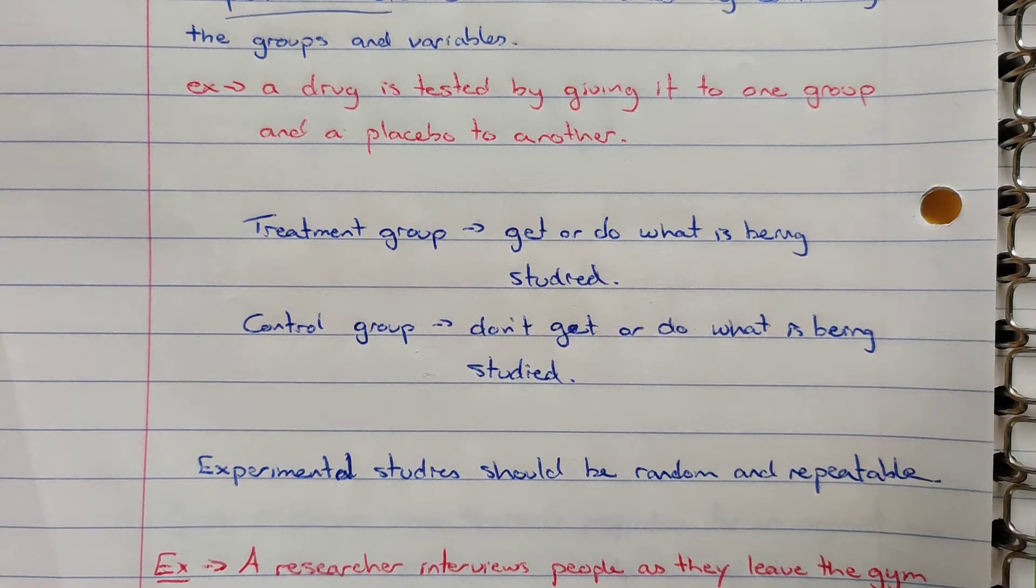Experimental studies should be random, they should be repeatable so that we get the same results over time and multiple studies, and that way we know our data is valid.